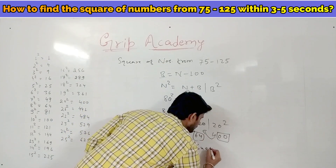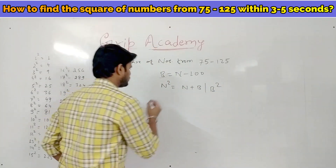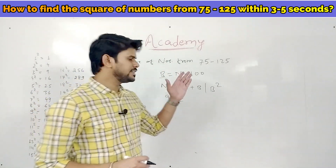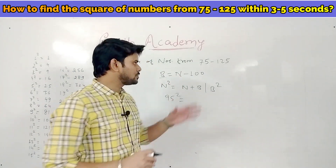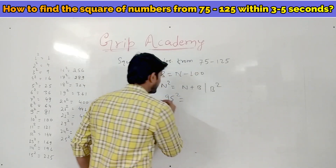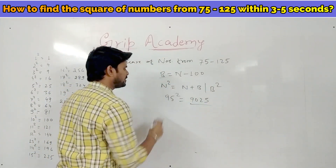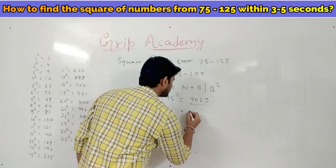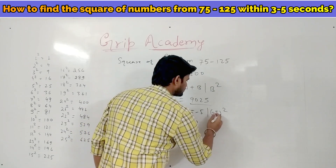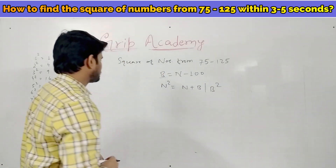Let's find the square of 95. According to the method for numbers ending in 5, 95² should be 9025. Let's verify: base is 95 minus 100 equals minus 5. So 95² equals 95 minus 5, slash minus 5 squared. That is 90, slash 25. So the answer is 9025, which matches.